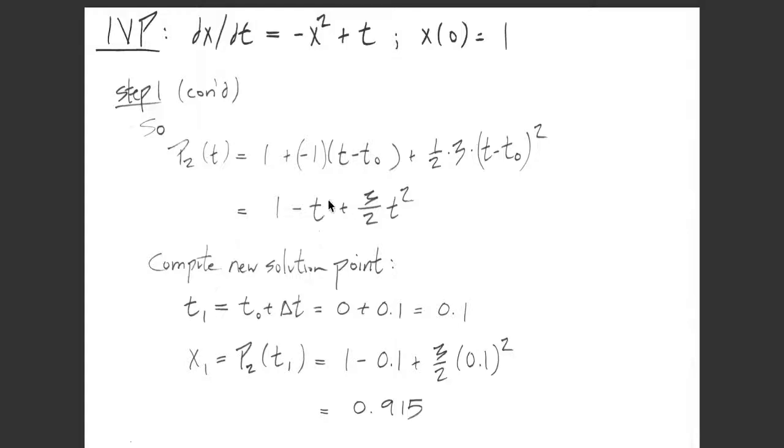We use that to compute the new solution point. T₁ = T₀ + Δt = 0 + 0.1 = 0.1, and x₁ = P₂(T₁) = P₂(0.1) = 1 - 0.1 + 1.5(0.1)² = 0.915. So we have a new solution point (0.1, 0.915).